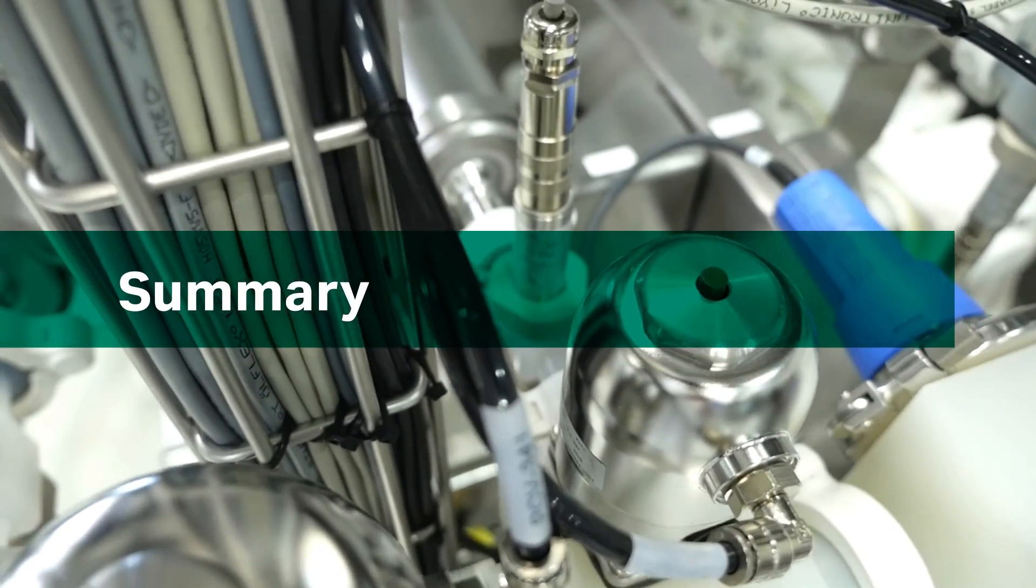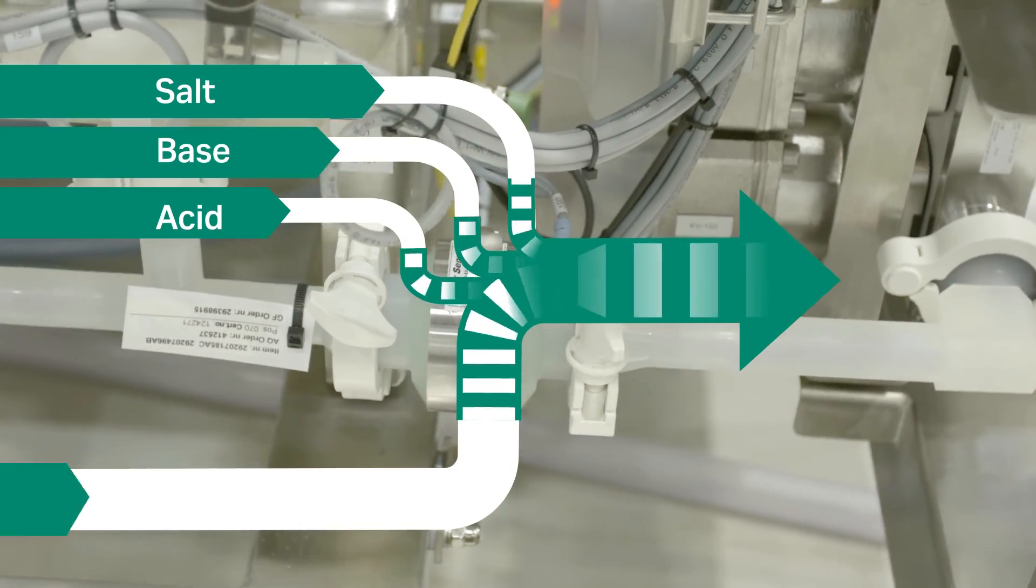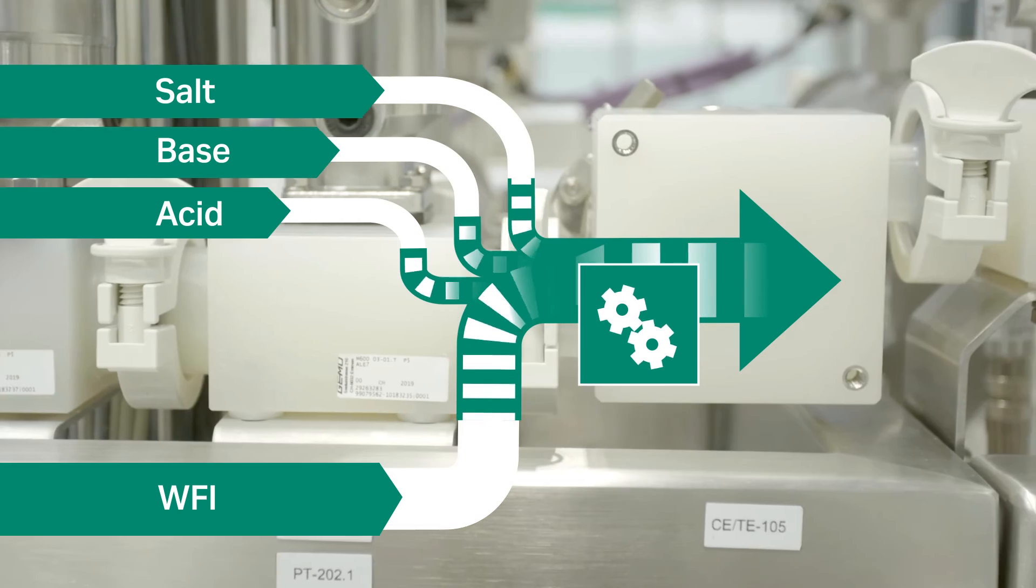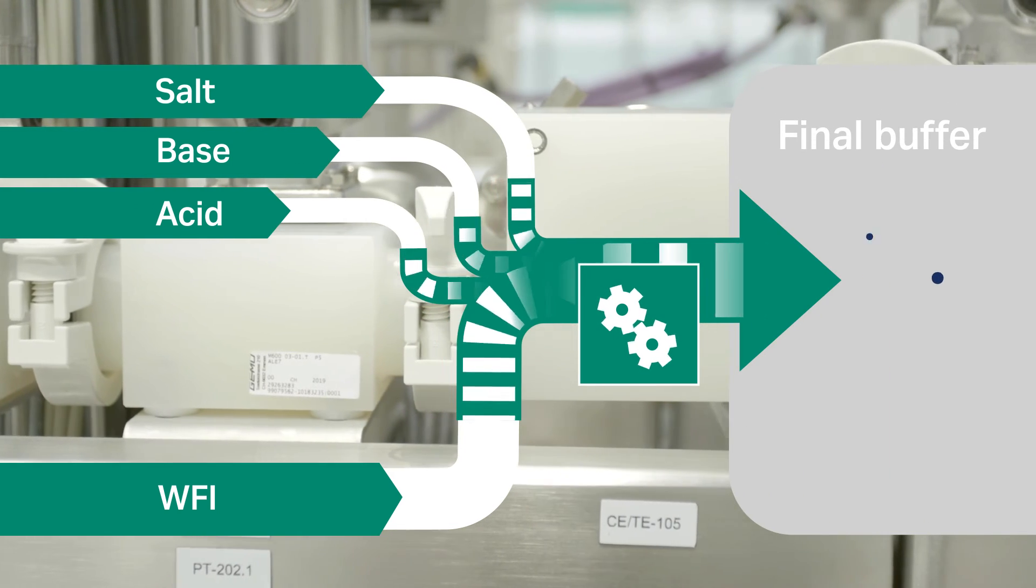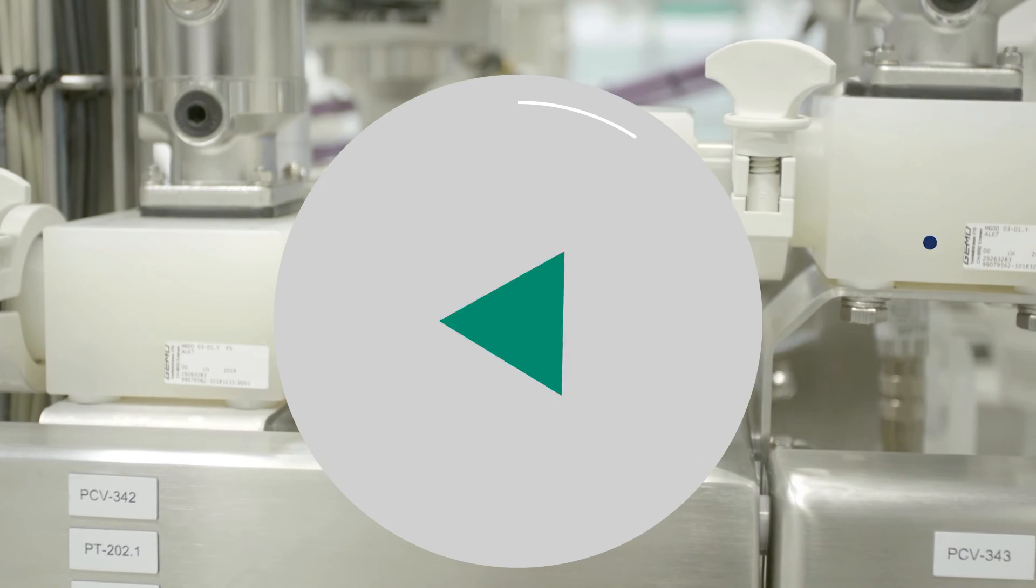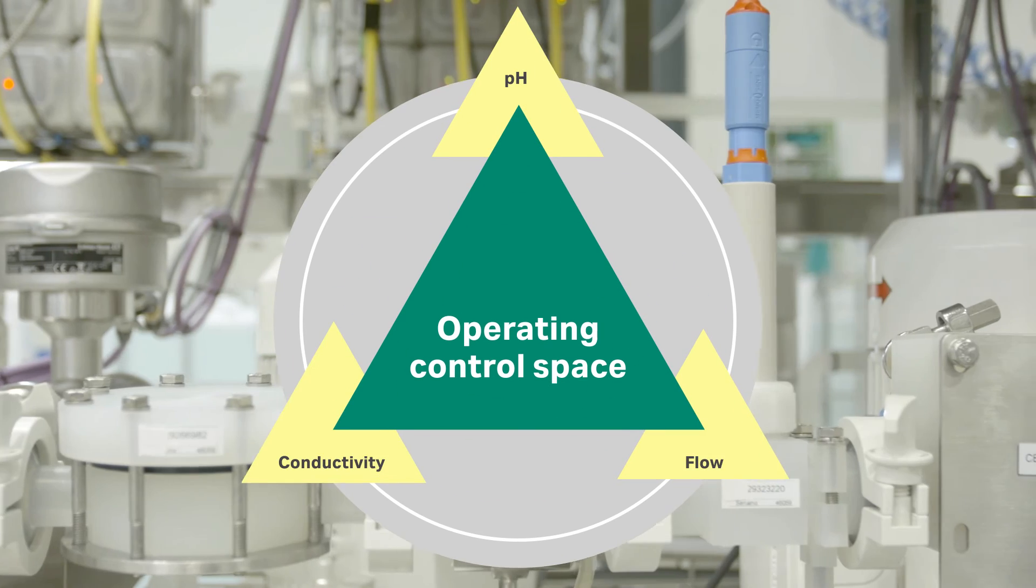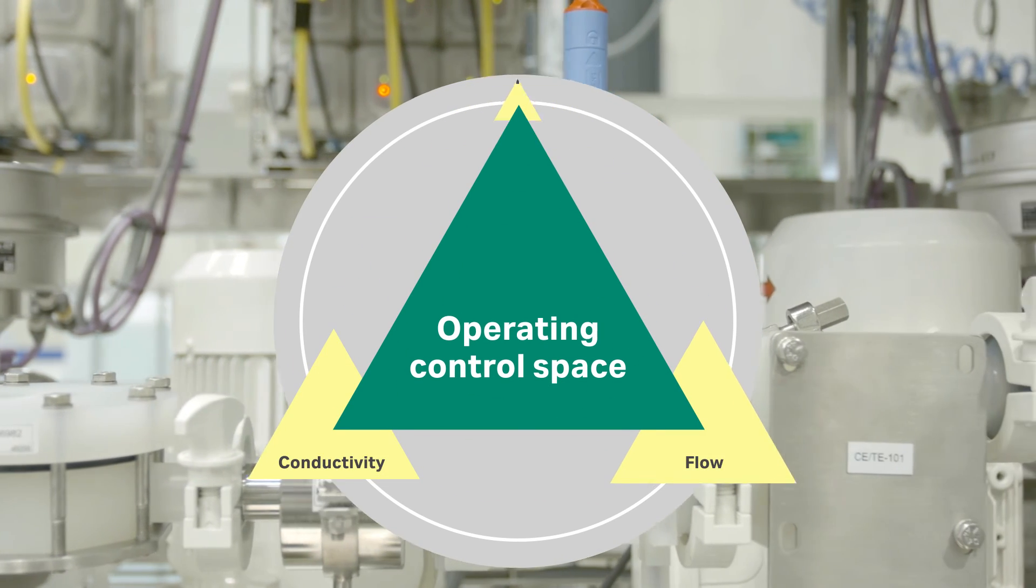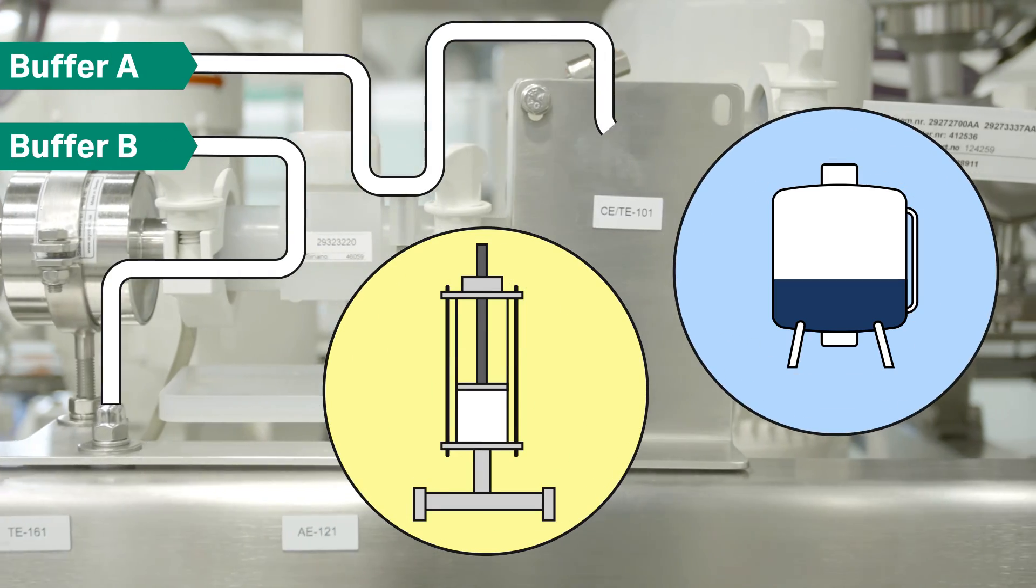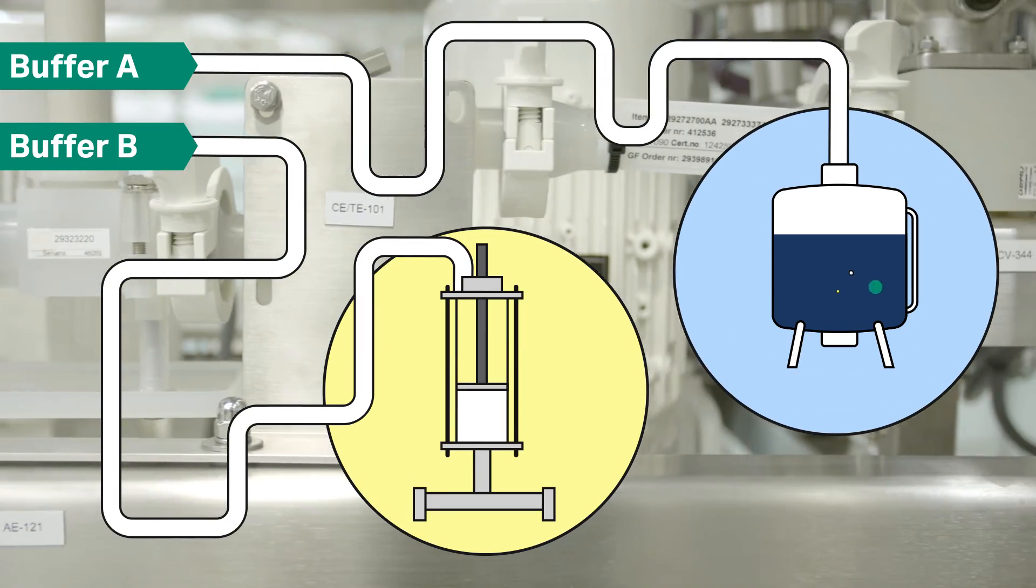In conclusion, inline conditioning automates your buffer preparation. Your buffers are broken up into their individual components and stock solutions, which are used to prepare multiple buffers. This gives you more flexibility in the buffer design space. System control modes ensure your buffers are made according to their specifications. You can use the system for buffer preparation only or in combination with chromatography.